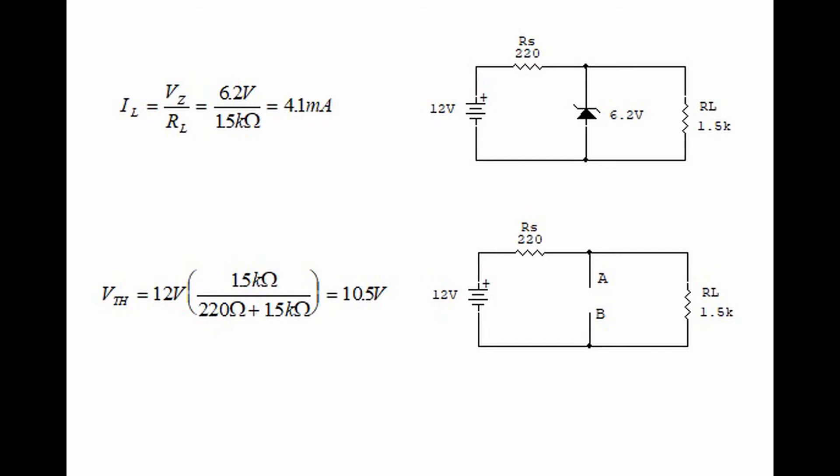Now we must find the Thévenin voltage by removing the zener diode and labeling the empty terminals A and B. If we imagine a voltmeter between terminals A and B, the Thévenin voltage is the voltage drop across the 1.5-kilohm resistor. This is found by: 12 volts times 1.5 kilohms divided by 220 ohms plus 1.5 kilohms, which equals 10.5 volts — this is the Thévenin voltage.